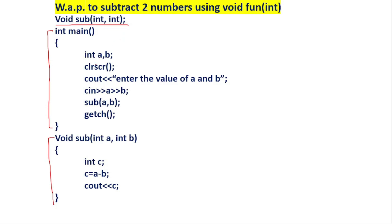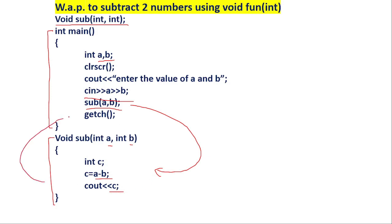In this program also, I have taken a and b variables inside int main and taken their values from the user. I am calling the function sub with a comma b inside main. When the compiler reads this calling statement, it will go downward because the function body is defined after main. Here, the a and b variables will receive new values from the calling statement, then this function will calculate the subtraction of the two numbers and print the answer. After executing the function body, the compiler goes back to main, checks for more statements, and then the program is terminated.